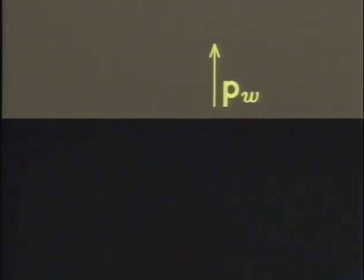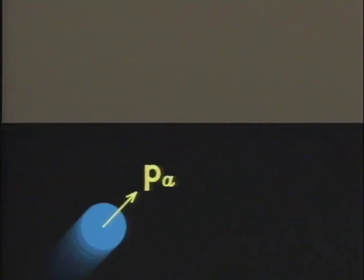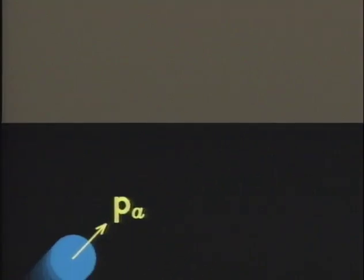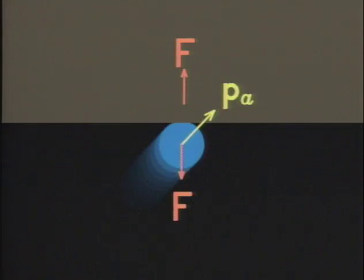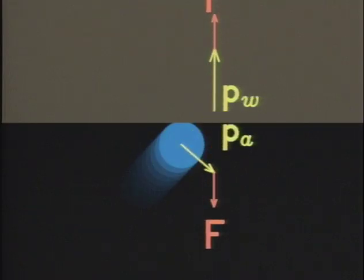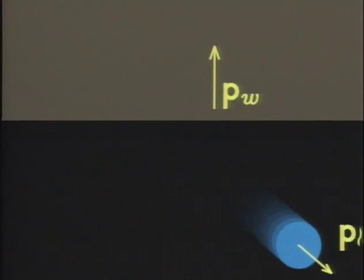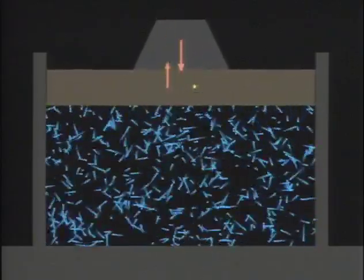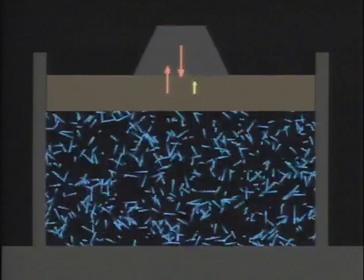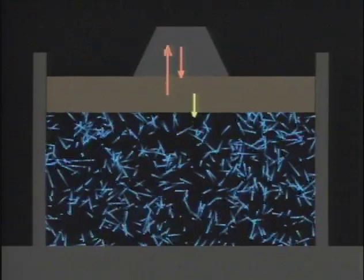Each time a gas molecule hits a wall, it gives the surface a tiny push. By bouncing off the wall, the molecule changes its momentum. The change in momentum means a force must have acted on the molecule, and that means the reverse force must have acted on the wall. As more and more molecules strike the wall, the individual pushes begin to merge. At an almost unimaginable rate, even within ordinary air, there's a steady drumbeat of molecules — a constant, uniform pressure against the wall.